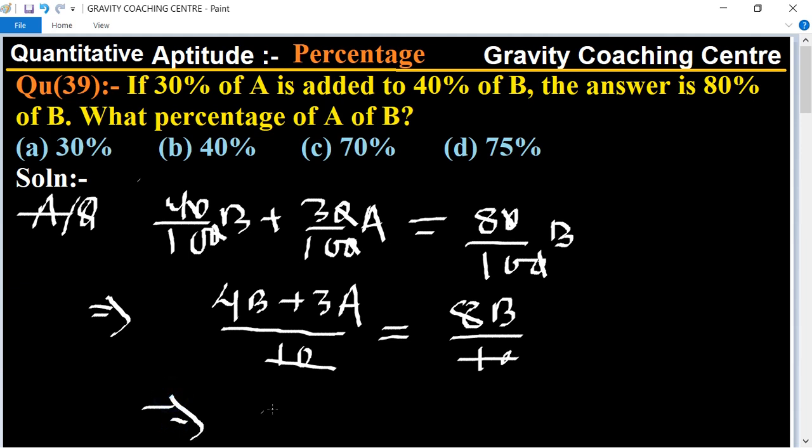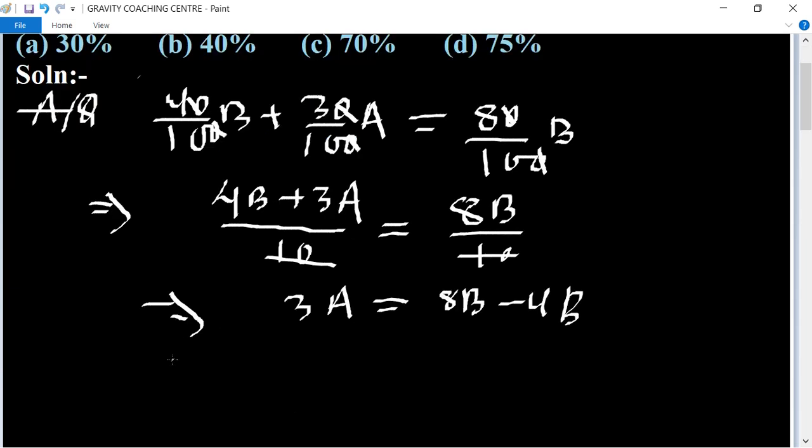3A equals 8B minus 4B, which implies that 3A equals 4B. Therefore, B upon A equals...